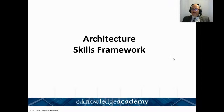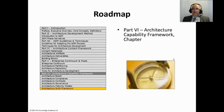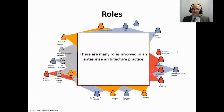In this module we're going to have a look at the Architecture Skills Framework. It's part of Part 6, the Architecture Capability Framework, and it gives guidance on the skills potentially required to fulfill the various roles within an enterprise architecture capability.